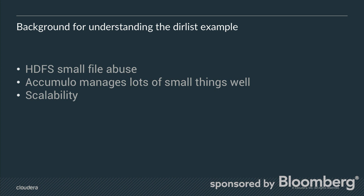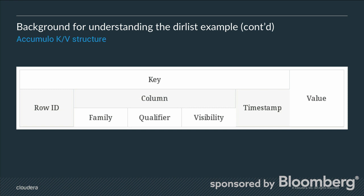Some background to understand this example: when you think of a file system you could have many small files, and if you have a lot of small files trying to store them onto HDFS you have the potential of a small file abuse problem where the name node is restricted based on heap size limits. Accumulo is designed to manage lots of small things extremely well, and since 2014 Accumulo has been able to span name nodes, so it's highly scalable.